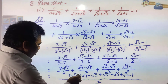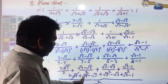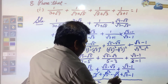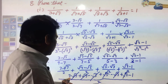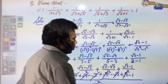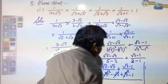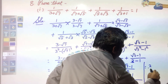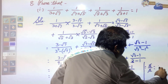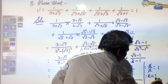Now √7 and -√7 cancel, √5 and -√5 cancel, √3 and -√3 cancel. We are left with (3 - 1)/2 = 2/2 = 1, which equals the RHS. Proved. In this type of question, you only need to know how to rationalize and simplify.